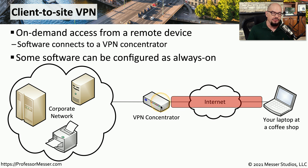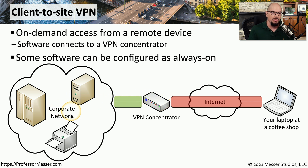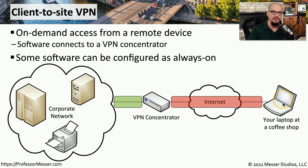The VPN concentrator receives the encrypted data, decrypts the information, and sends it into the corporate network. The process is reversed on the way back, and the laptop is responsible for decrypting the data when it's received on the other side.